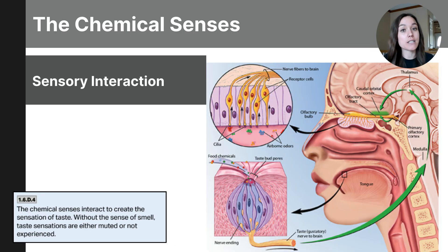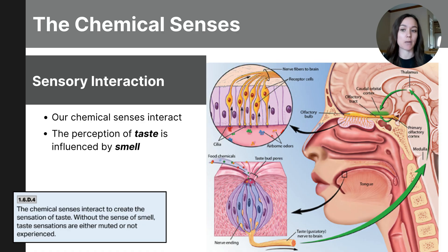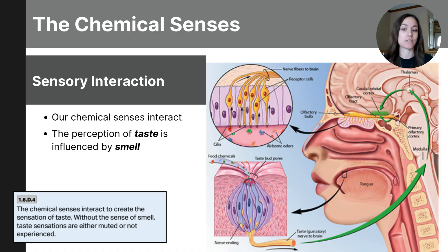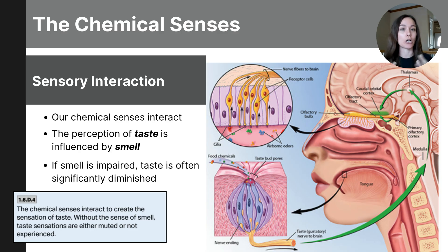Sensory interaction is a concept related to sensation as a whole, but the College Board wants you to understand how it is unique to taste and smell as chemical senses. Taste buds on the tongue detect basic tastes, but much of what we perceive as taste comes from our sense of smell. When we eat, odor molecules travel to the olfactory receptors in the nose and enhance our sense of taste. If the sense of smell is impaired, like when we have a cold, the flavor of food will be significantly diminished, showing how closely linked our senses of taste and smell are.